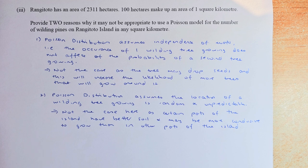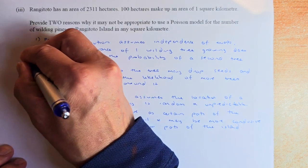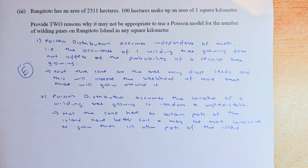Second point, Poisson distribution assumes the location of the wilding tree growing is random and unpredictable. However, in our case here, this is not the case because we know that in certain parts of the Rangitoto Island, they have better soil quality and this may be more conducive to grow the wilding tree than the other parts of the island. So if you can answer both of these points, you will get excellent in this paper and an E7 for question 2A part 1, 2 and 3. So have a go at it again and I will see you in the next one. Cheers everyone and have a good day.